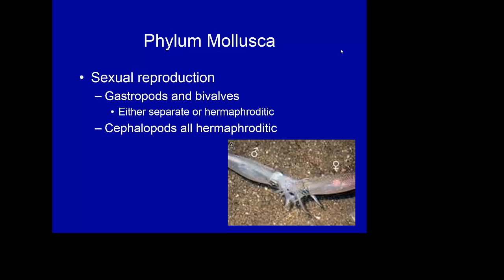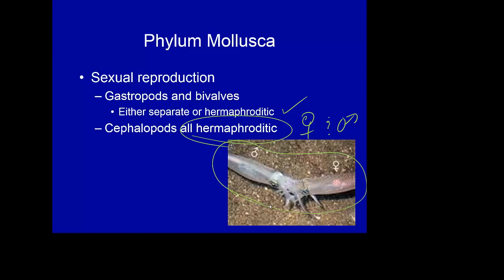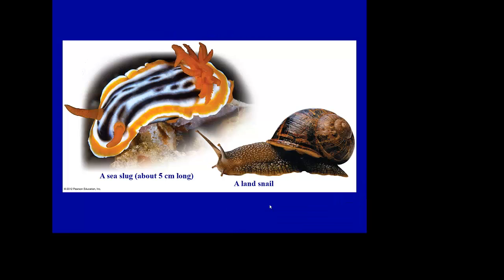Reproduction in our mollusks is almost always sexual. Gastropods and bivalves can be either separate sexes or hermaphrodites. Cephalopods are actually all hermaphrodites, carrying both male and female components together — and when they join together, they actually decide at that point who's going to be male and who's going to be female for the occasion.